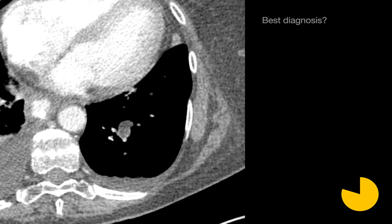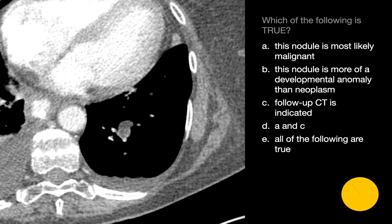What's your best diagnosis for this lung nodule? The well-circumscribed lung nodule in this patient's left lower lobe is of the same attenuation as the subcutaneous fat in the patient's chest wall. The presence of macroscopic fat in a circumscribed lung nodule informs us that this nodule is a pulmonary hamartoma. Although pulmonary hamartomas are usually classified as benign neoplasms, they are probably more of a developmental anomaly than a true neoplasm. Pulmonary hamartomas are benign, and no follow-up CT surveillance is indicated.